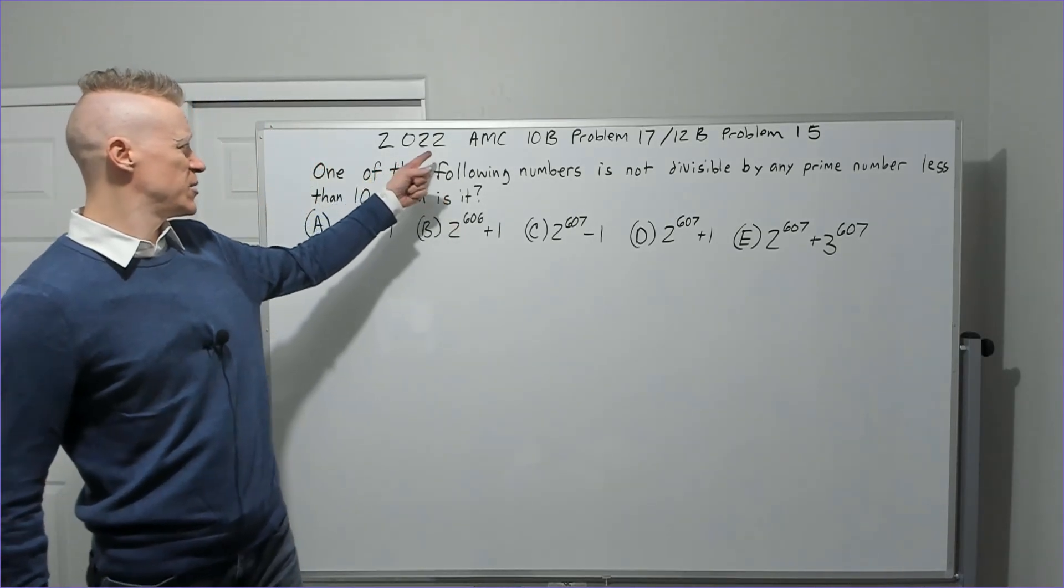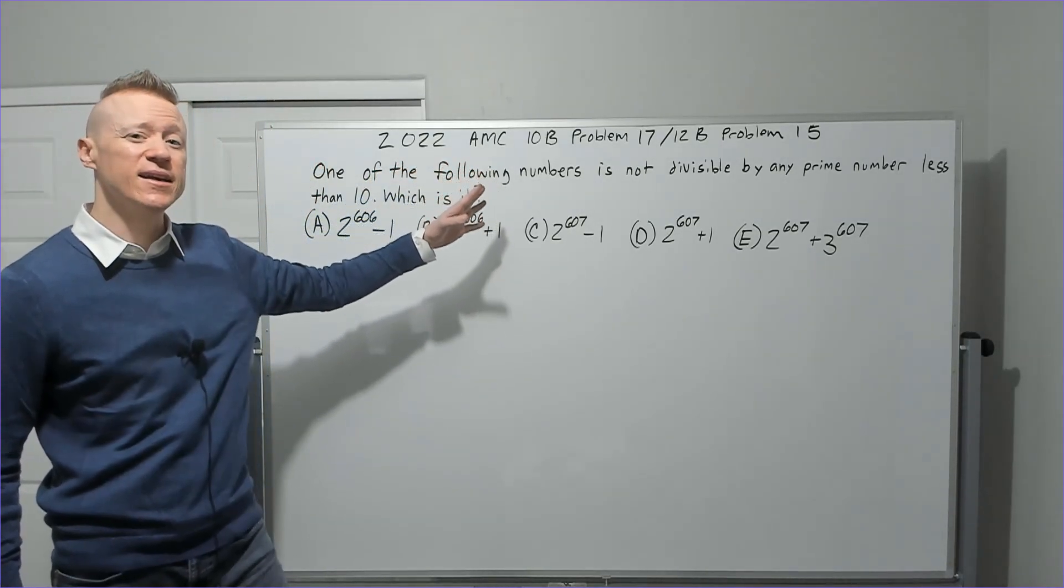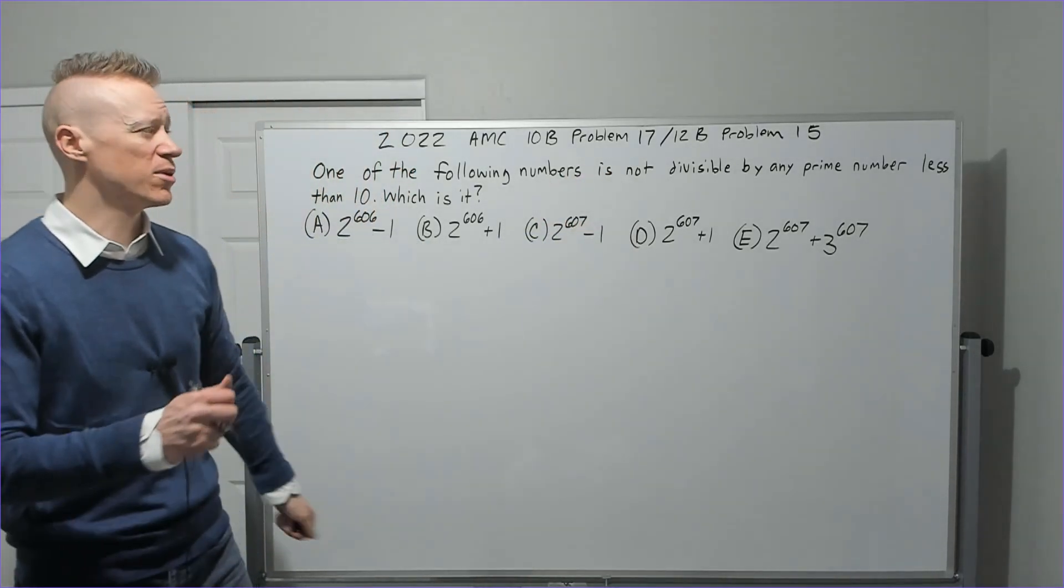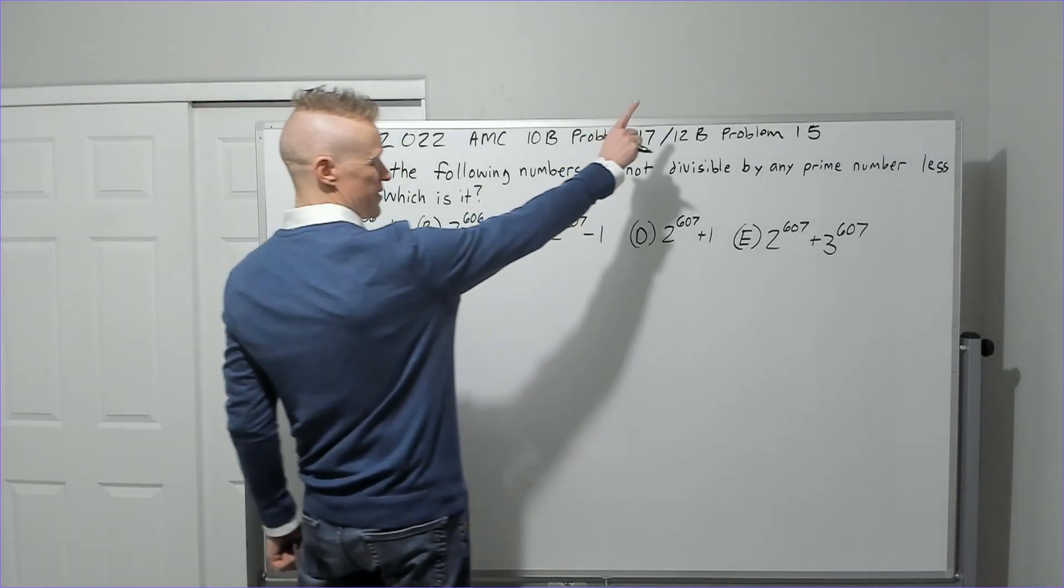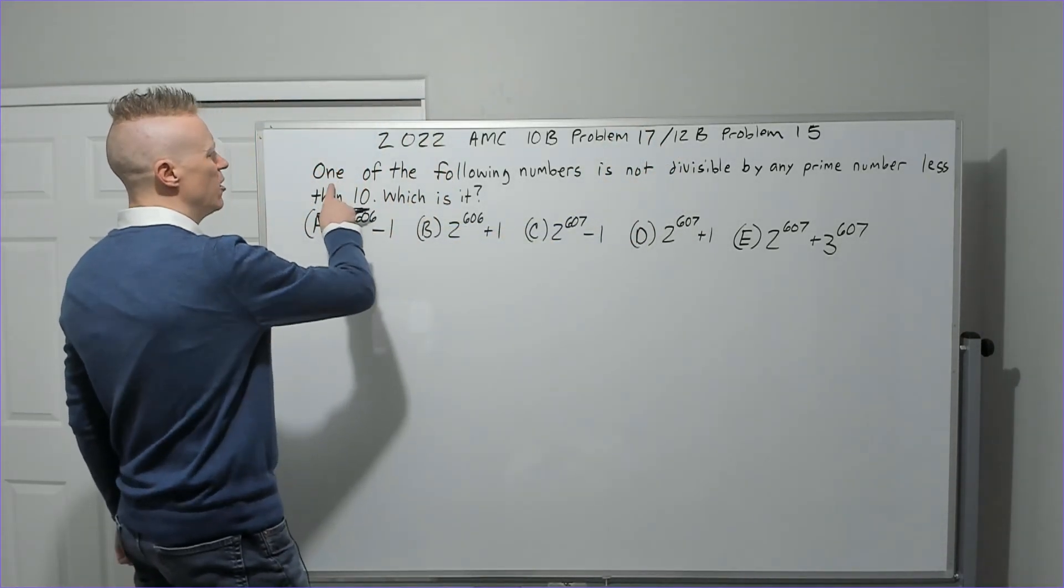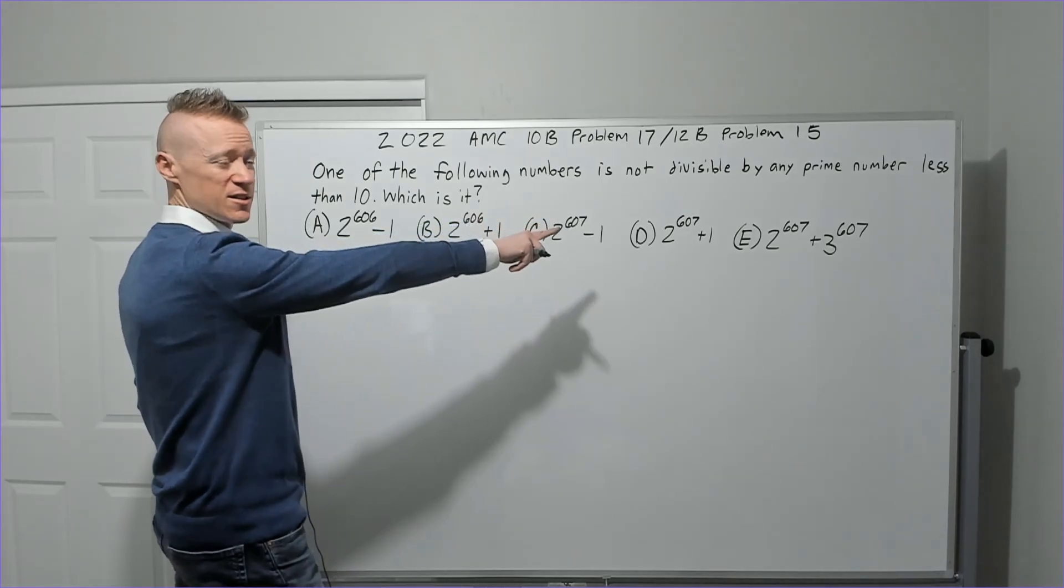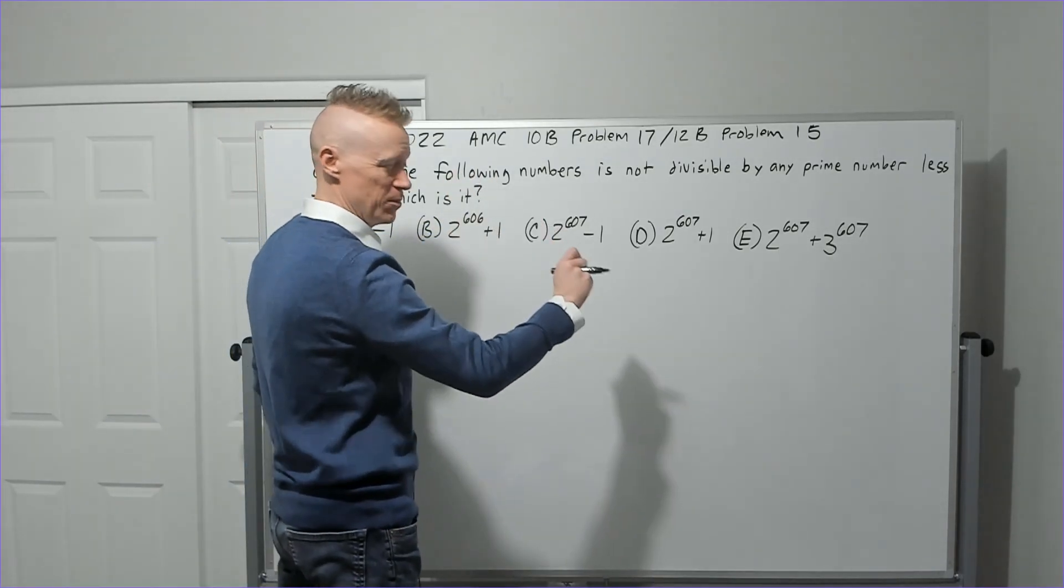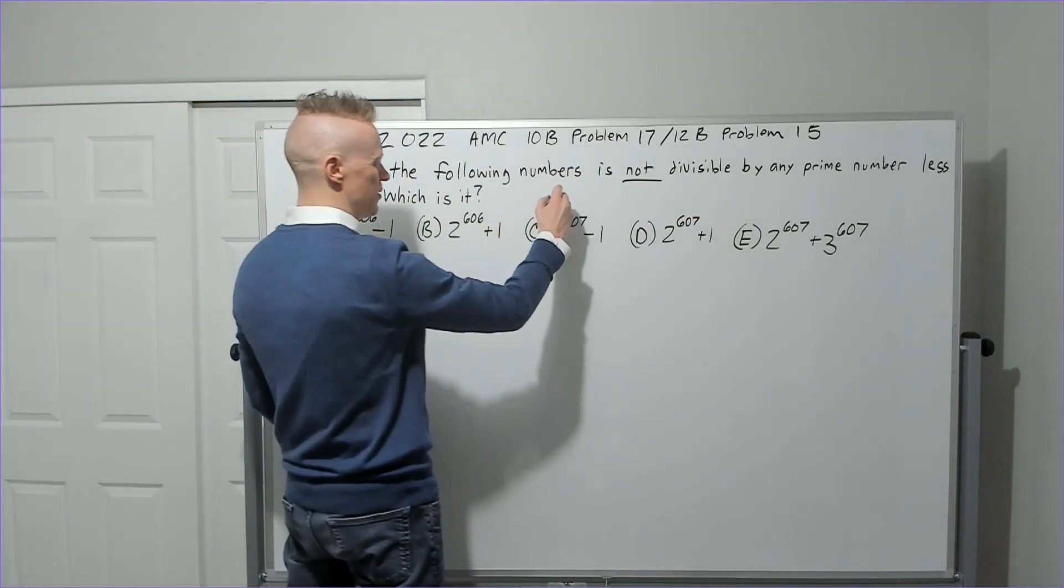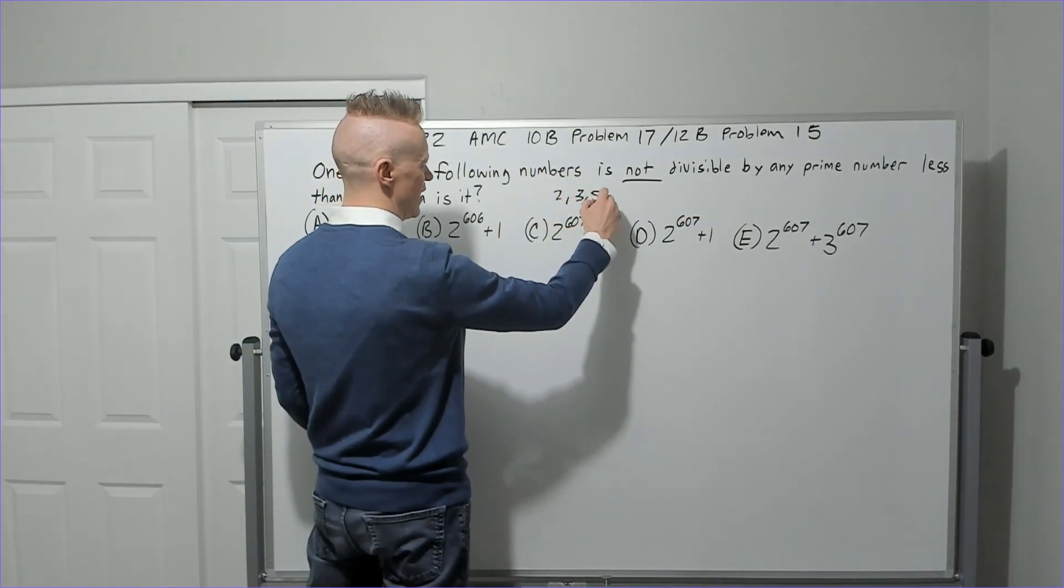Okay, now we're going to be doing the 2022 AMC 10B problem 17. It was also the 12B problem 15, making it the last one of this rapid fire set for the 12B. One of the following numbers is not divisible by any prime number less than 10—that would be 2, 3, 5, and 7. Which is it?